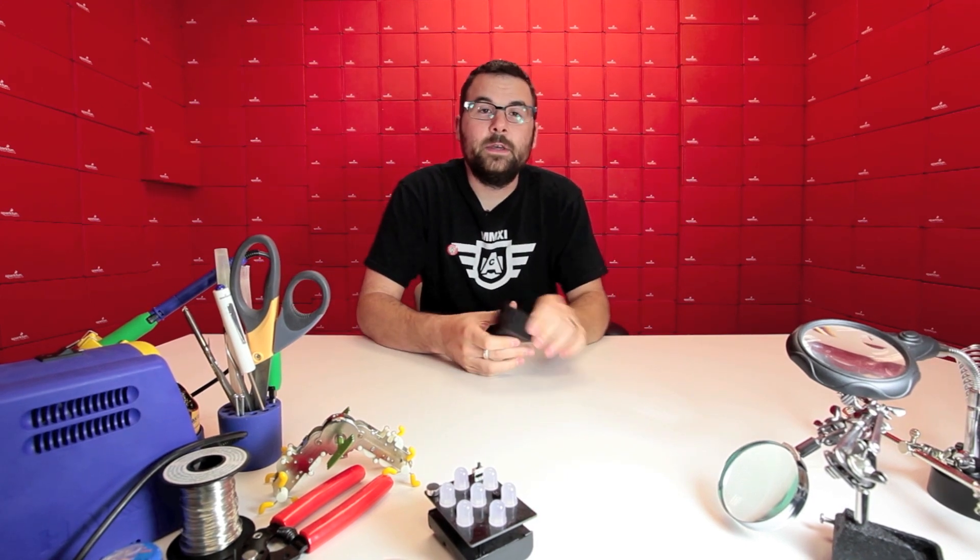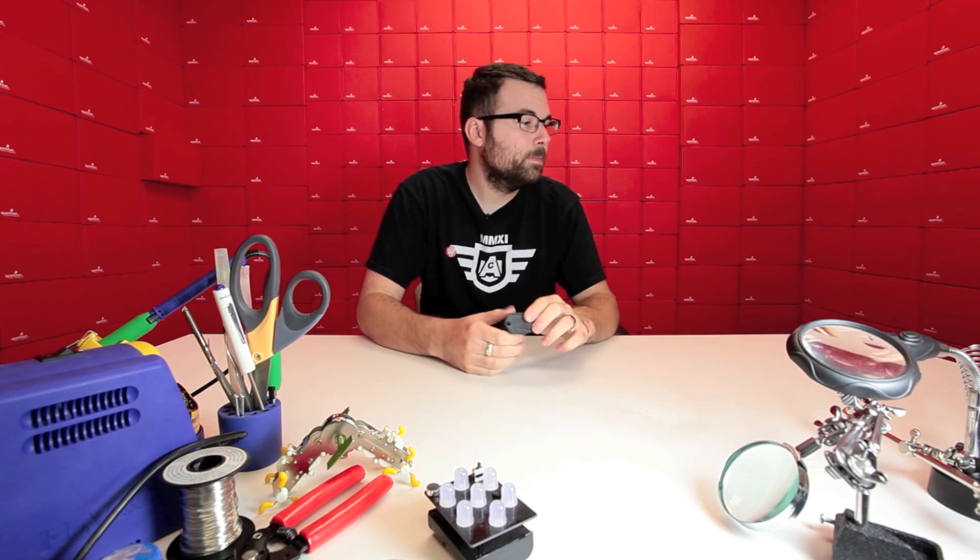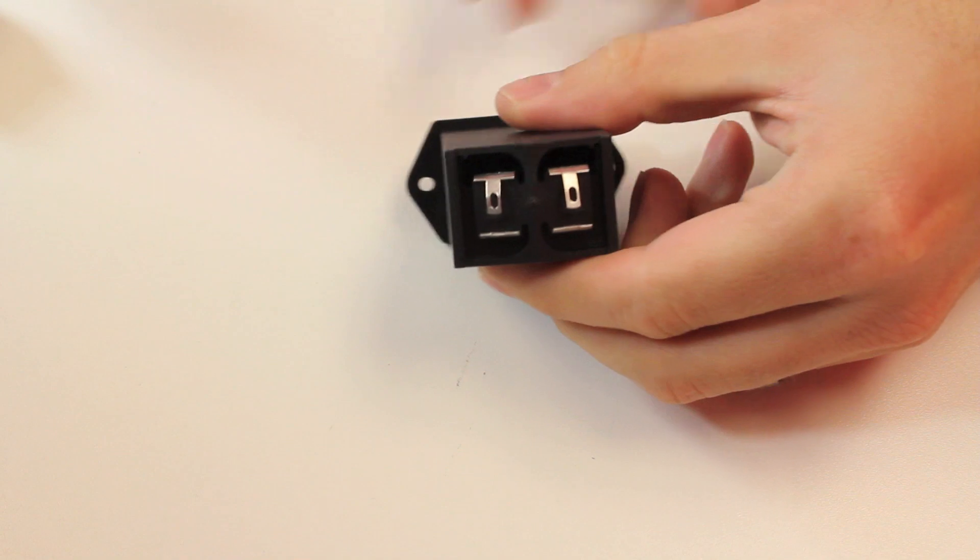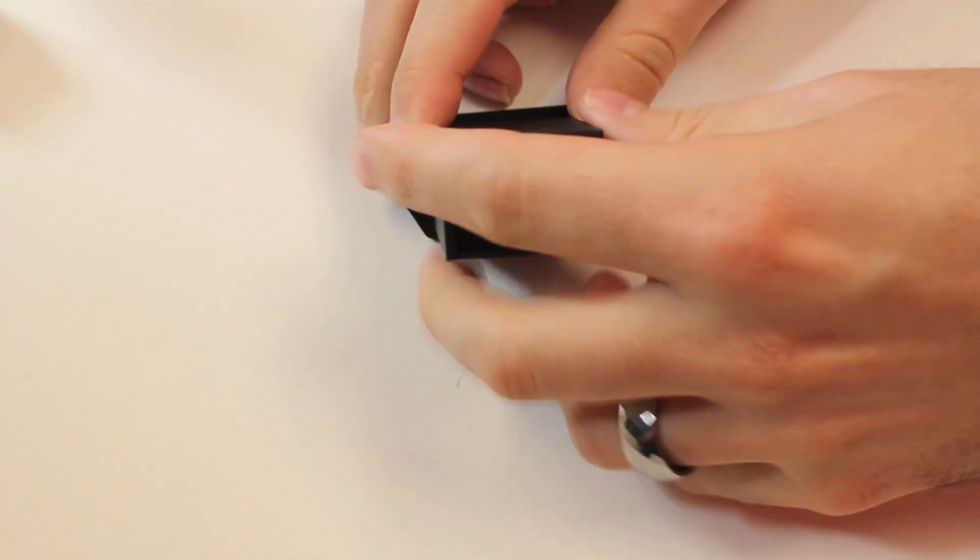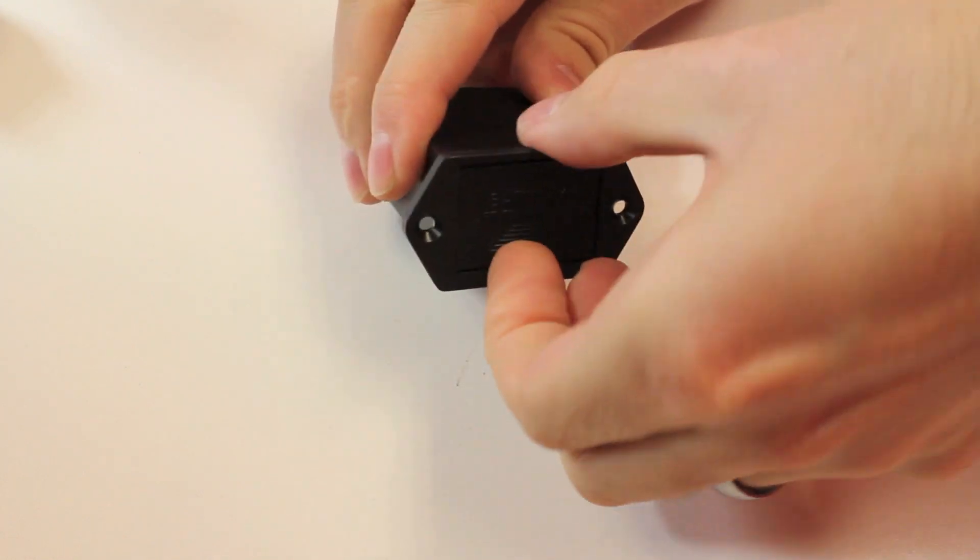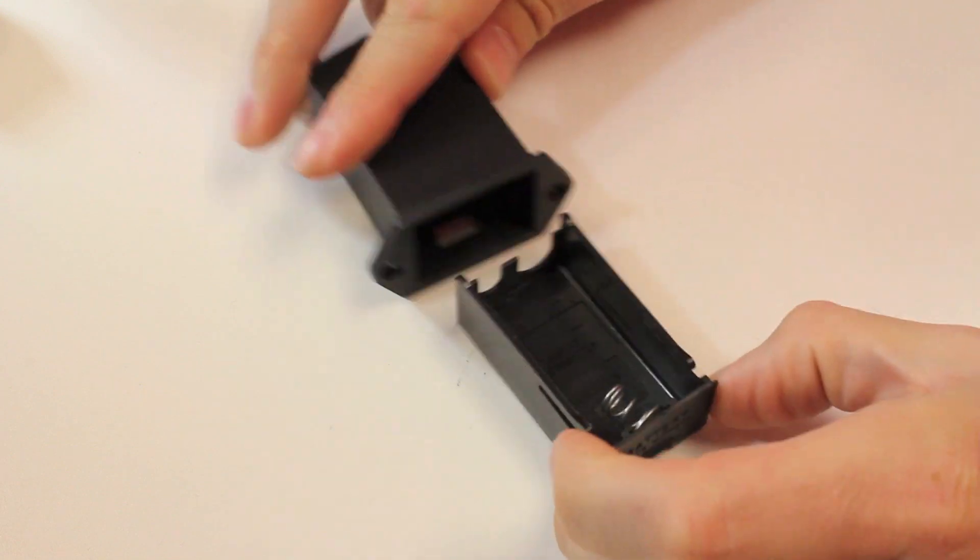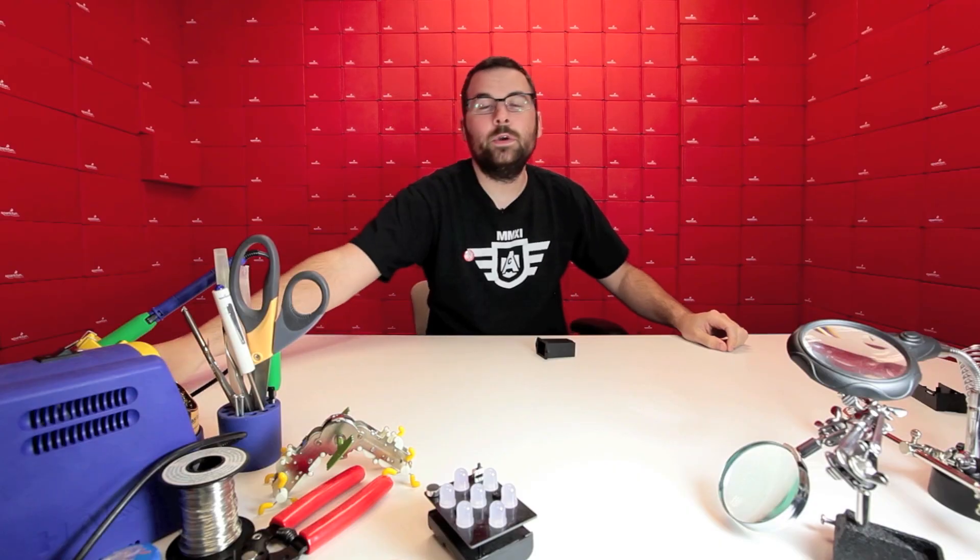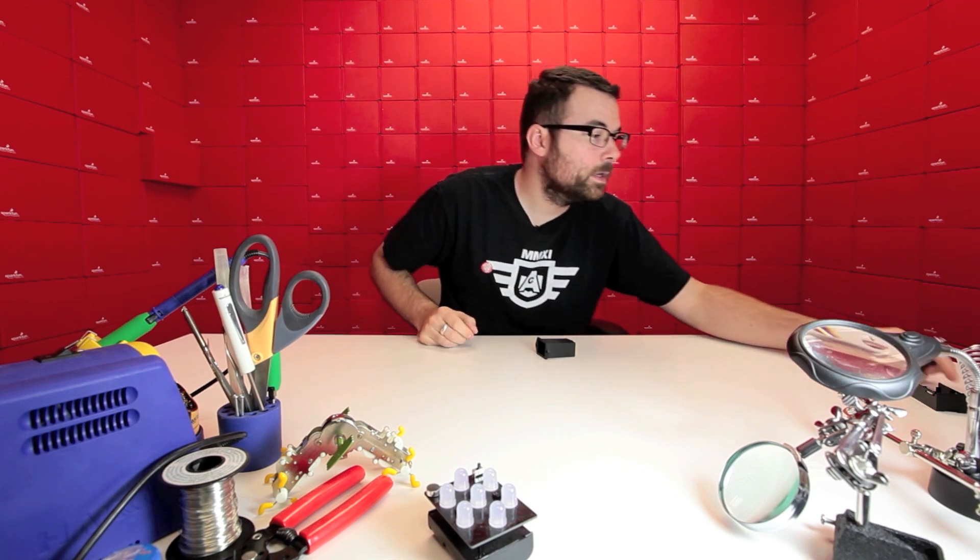So next up, we've got this 9-volt panel mount battery holder. So it looks like that. You've got some contacts in the back that you can solder to. Then you have this little drawer in the front. So we just lift that little tab, open it up.